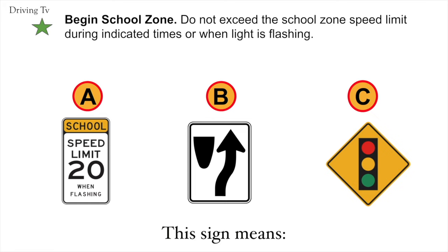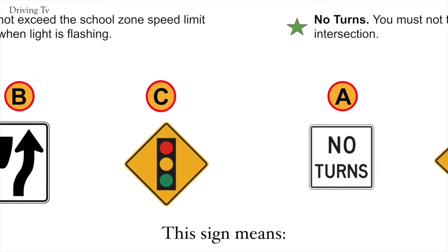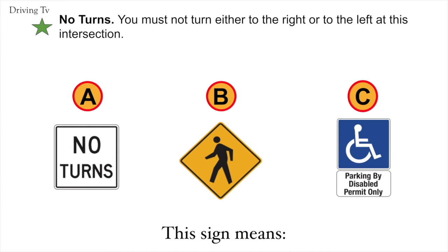Begin school zone. Do not exceed the school zone speed limit during indicated times or when the light is flashing. No turns: you must not turn either to the right or to the left at this intersection. The correct answer is A. No turns.